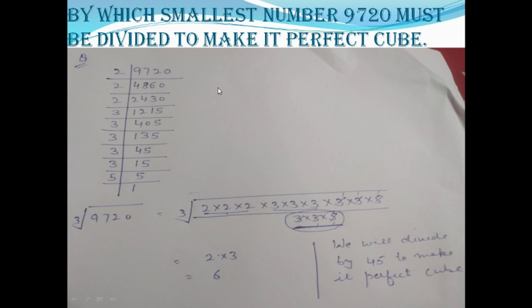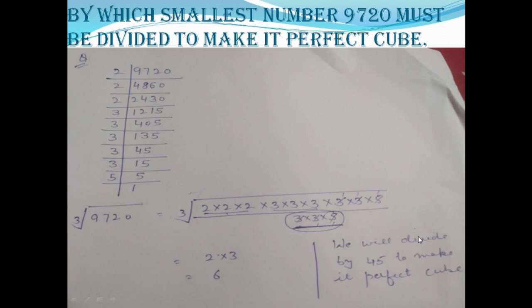Since the question asks by which smallest number we should divide, we will divide by the leftover numbers — 3, 3, and 5. So we divide by 3 × 3 × 5, cancelling them out, and we are left with two complete groups. You get 2 × 3 = 6 as the cube root. The number you divided by is 3 × 3 × 5 = 45. We must divide 9720 by 45 to make it a perfect cube.